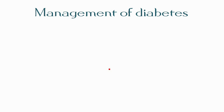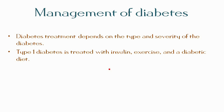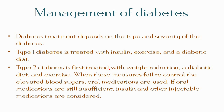Diabetes treatment depends on the type and severity of the condition. Type 1 diabetes is treated with insulin, exercise, and a diabetic diet — including low carbohydrate and low fat intake, with carbohydrates taken in the form of starches and complex sugars. Type 2 diabetes is first treated with weight reduction, a diabetic diet, and exercise. When these measures fail, oral medications are used, and if still insufficient, insulin and other injectable medications are considered.